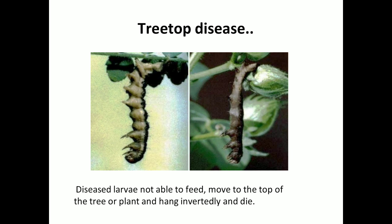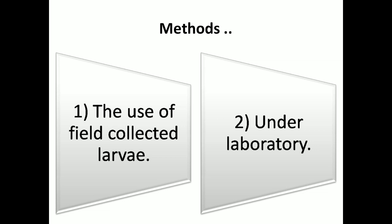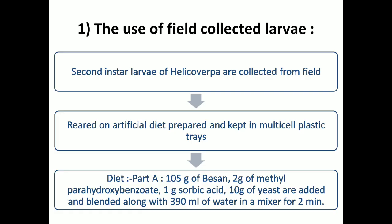There are two methods of mass multiplication. The first is the use of field collected larvae, and the second is under laboratory conditions. For the first method, collect the second instar larvae of Helicoverpa from the field. Then rear them on a multi-cell plastic tray with the help of artificial diet. The contents of the diet are as follows.